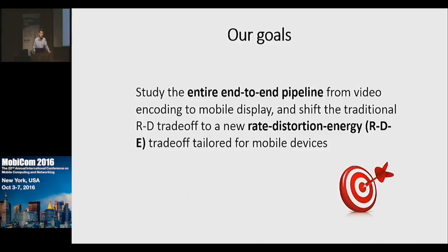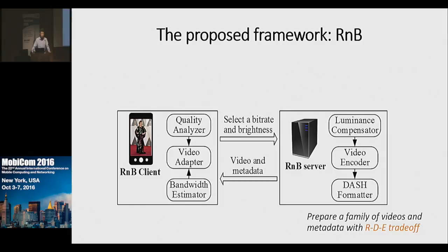To summarize, the goal of this paper is to address the end-to-end pipeline from video encoding to video display, and to shift the original classic rate-distortion trade-off to a new rate-distortion-energy trade-off tailored for mobile devices. We propose RMB, a rate and brightness adaptation framework. The key difference of RMB is that at the server side, RMB prepares a family of video versions with the rate-distortion-energy trade-off.